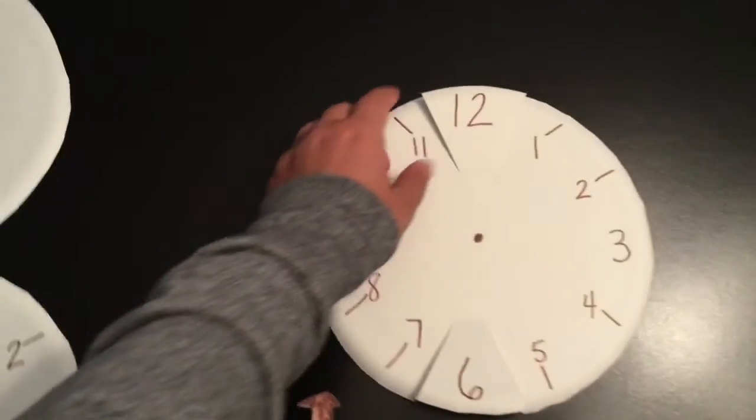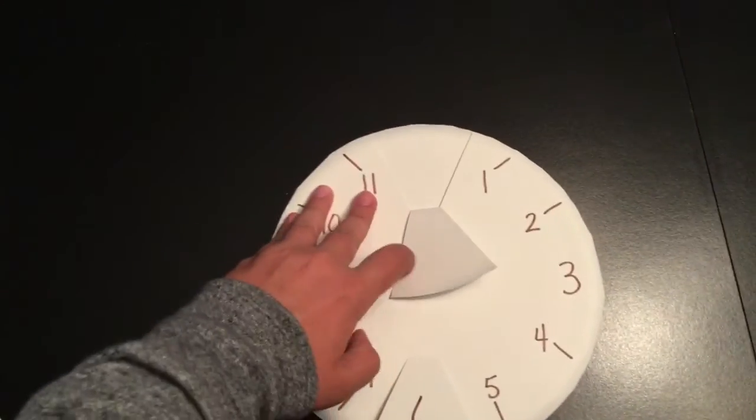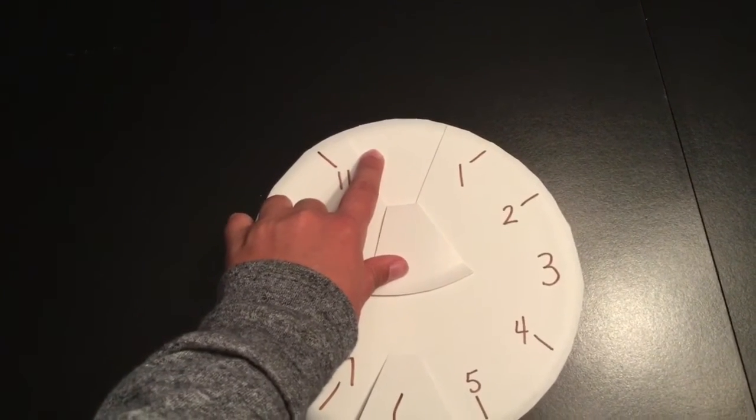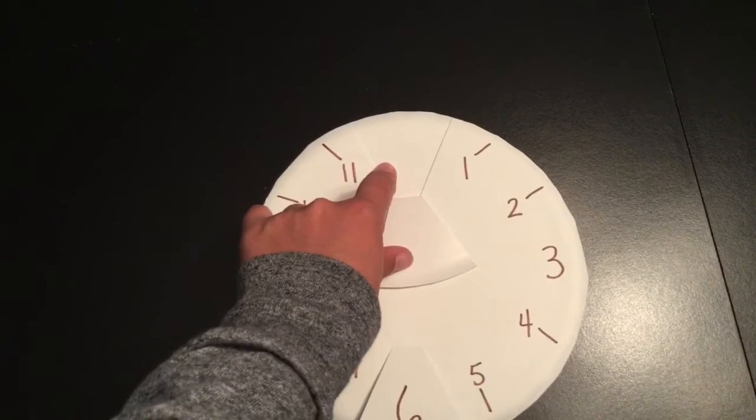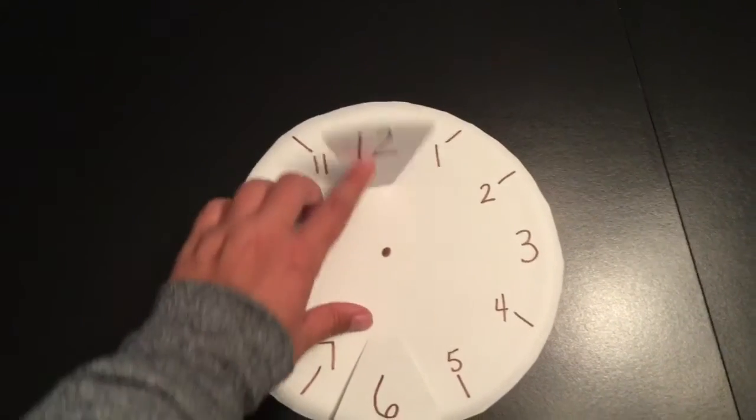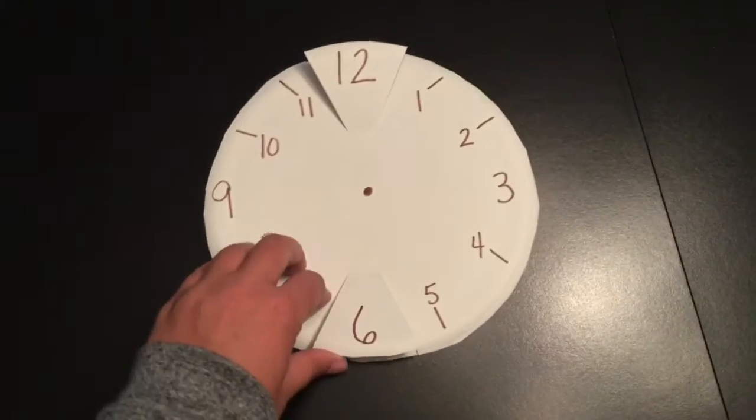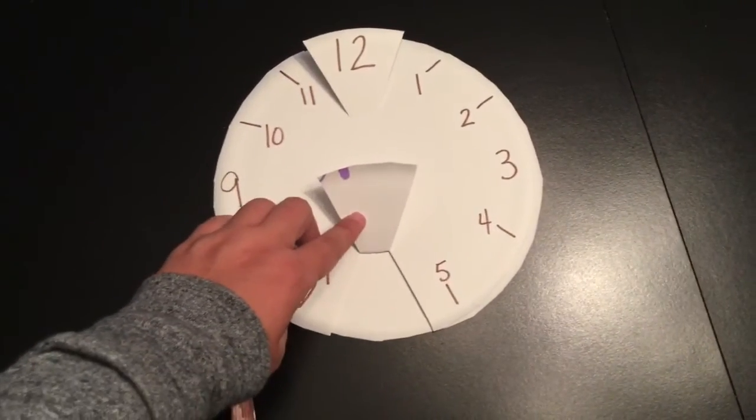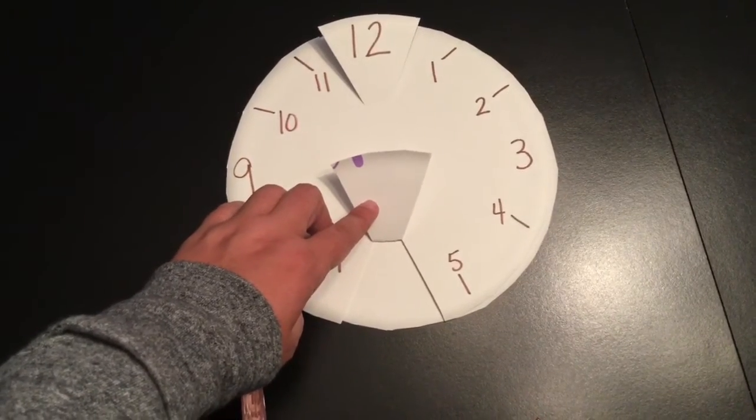Now if you open the flap under the 12, you can write zero for zero minutes or you can write o'clock so you notice it's o'clock when it's pointing to the 12. And under the 6 I write a 30 so I know this means 30 minutes.